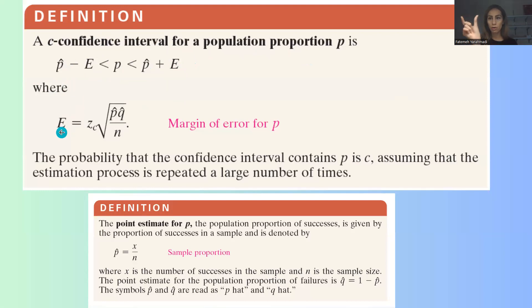E, or the margin of error or the distance, is defined as z sub c times the square root of p-hat q-hat divided by n.